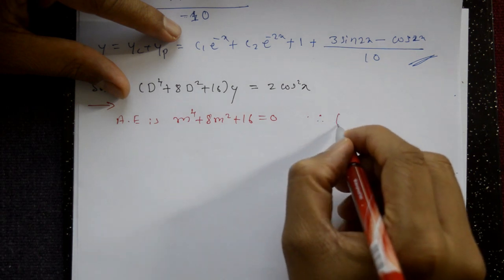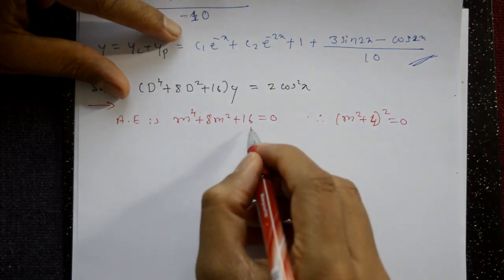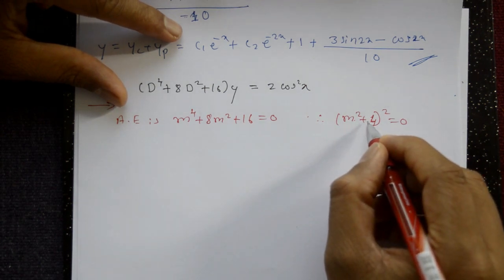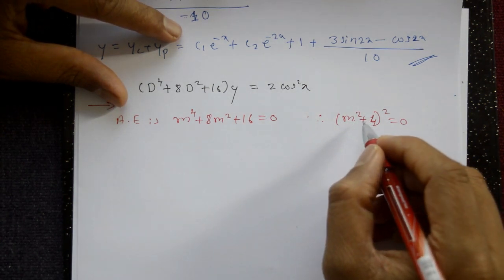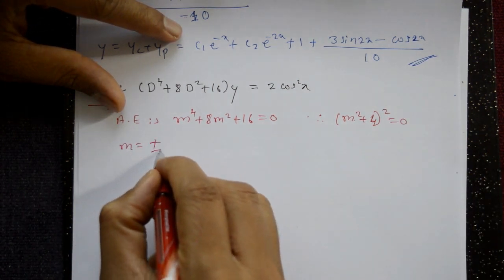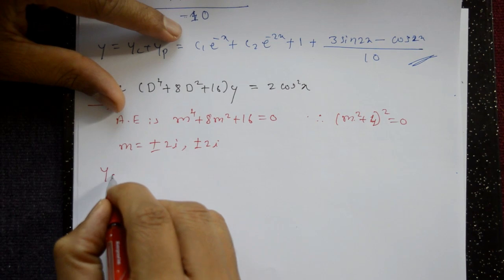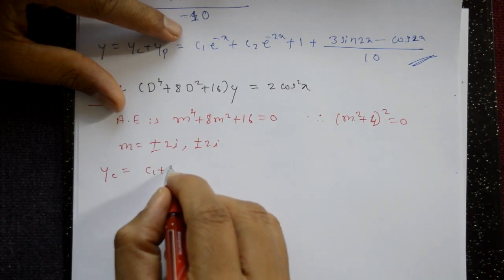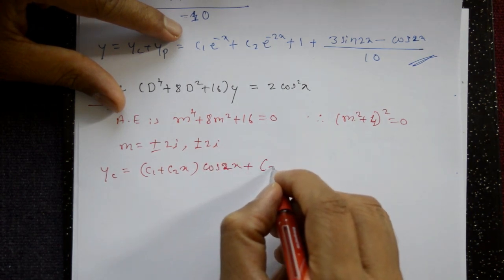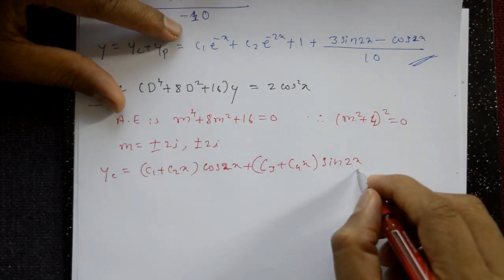From (m² + 4)² = 0, we get m² = -4, so m = ±2i. But this is repeated (whole square), so m = ±2i, ±2i. The complementary function for repeated complex roots is: yc = (C1 + C2·x)cos2x + (C3 + C4·x)sin2x, with alpha = 0.